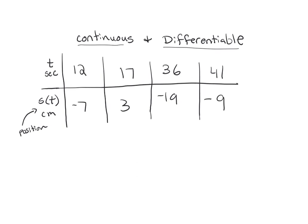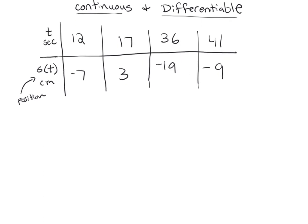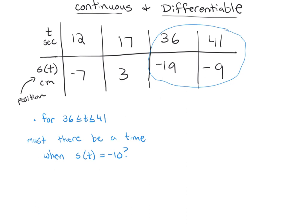First question: on the interval from 36 to 41, must there be a time when S of T equals negative 10? This is asking about a y-value, so this is intermediate value theorem. On this interval, the y-values are going from negative 19 to negative 9. Does negative 10 exist in that interval? Yes — so yes, by the intermediate value theorem.